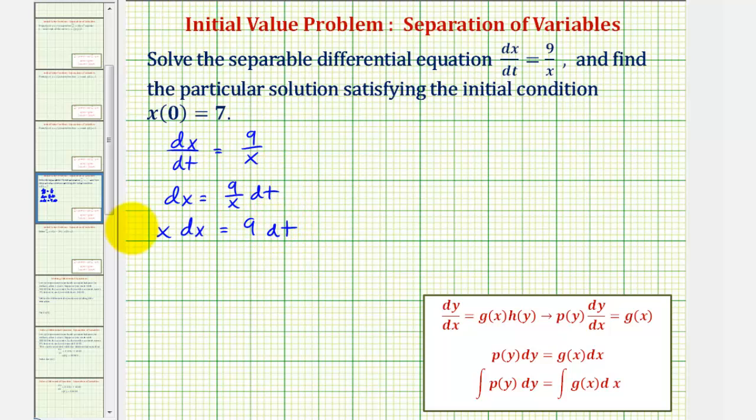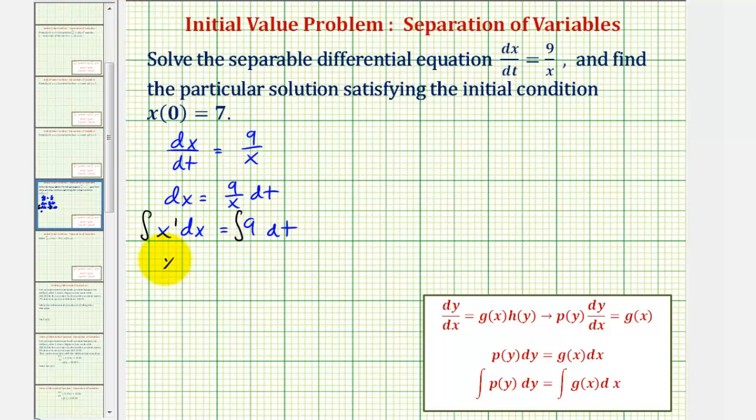Now that we have the equation in this form, we can integrate both sides of the equation. The integral of x to the first with respect to x would be x squared divided by 2 plus a constant of integration, but we'll include the constant with the constant on the right.